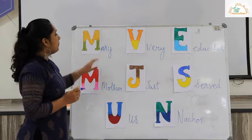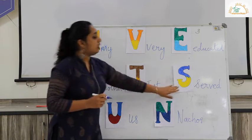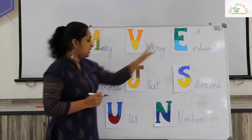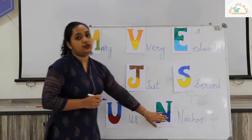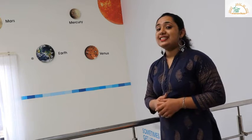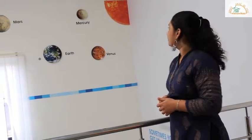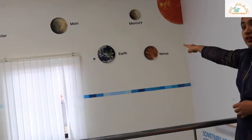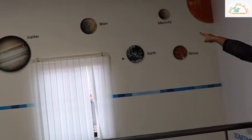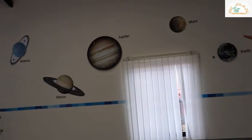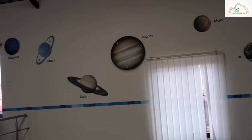Let's complete it: my very educated mother just served us nachos. Let us repeat it again: my very educated mother just served us nachos. Memorize this children so that you can remember the names of planets in order. So children, let's take a tour around the solar system. We have the Sun, first planet Mercury, second Venus, third Earth, fourth Mars, fifth — the largest planet — Jupiter, the beautiful planet Saturn, Uranus, and the last planet just far from the Sun, that is Neptune.